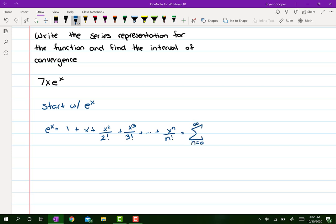So we write the sigma form, which is going to be x divided by n factorial. In the sigma, it should be x to the n. So then I multiply everything through by 7x.